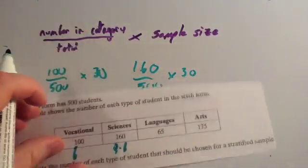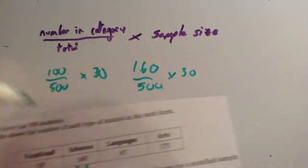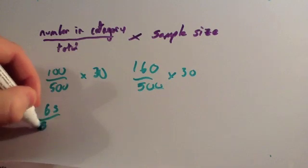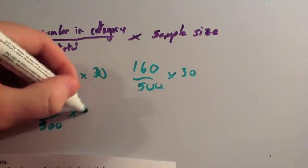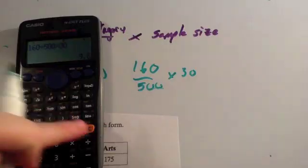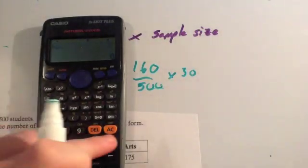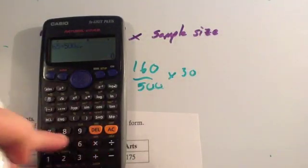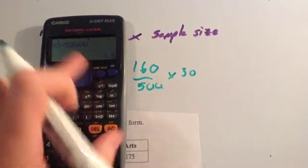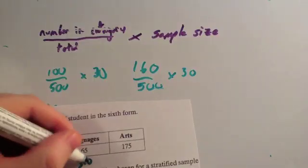Next, languages. There are 65 people doing languages, so that's 65 out of 500 times by the sample size of 30. So 65 divided by 500 times by 30 equals 3.9 — so you'd want to take 3.9 students doing languages.